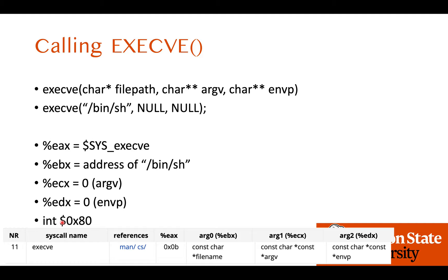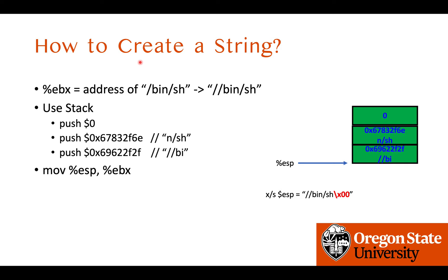Moving the system call number, zeroing ECX and EDX, and running int $0x80 are all easy. But how do you put the address of the string /bin/sh into the EBX register? To do that, we can create the string on the stack using some instructions. Instead of putting the seven-byte string /bin/sh, I will put //bin/sh — eight bytes — because an additional slash is ignored by the operating system, and this aligns to four-byte granularity for 32-bit or 64-bit processors. The meaning of both strings is the same to the operating system.